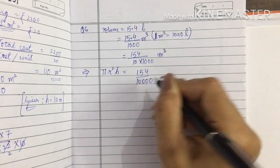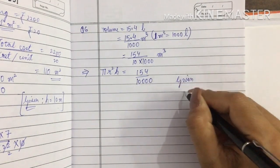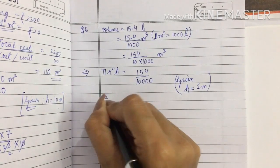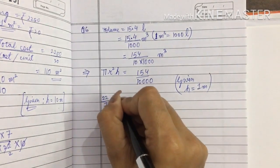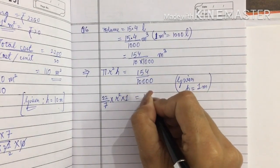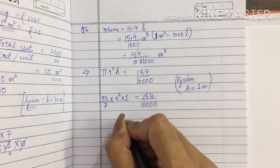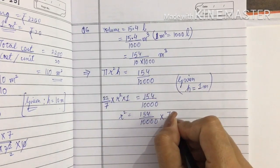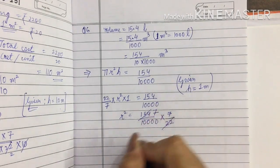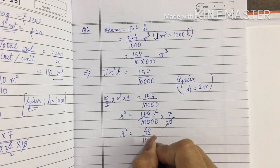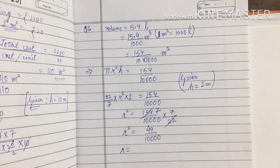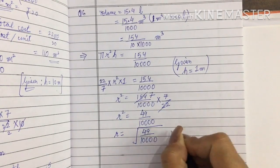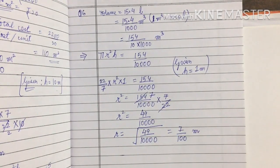Using the value of h = 1 meter, we substitute: (22/7) × r² × 1 = 154/10,000. So r² = (154/10,000) × (7/22), which comes out to be 49/10,000. Taking the square root of both sides, √(49/10,000) = 7/100. So the radius comes out to be 7/100 meters.